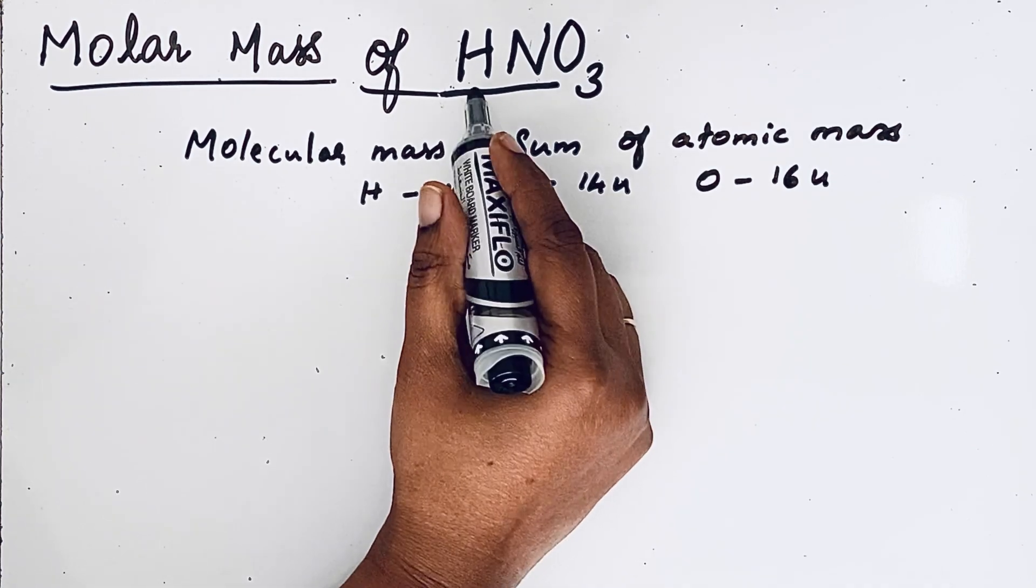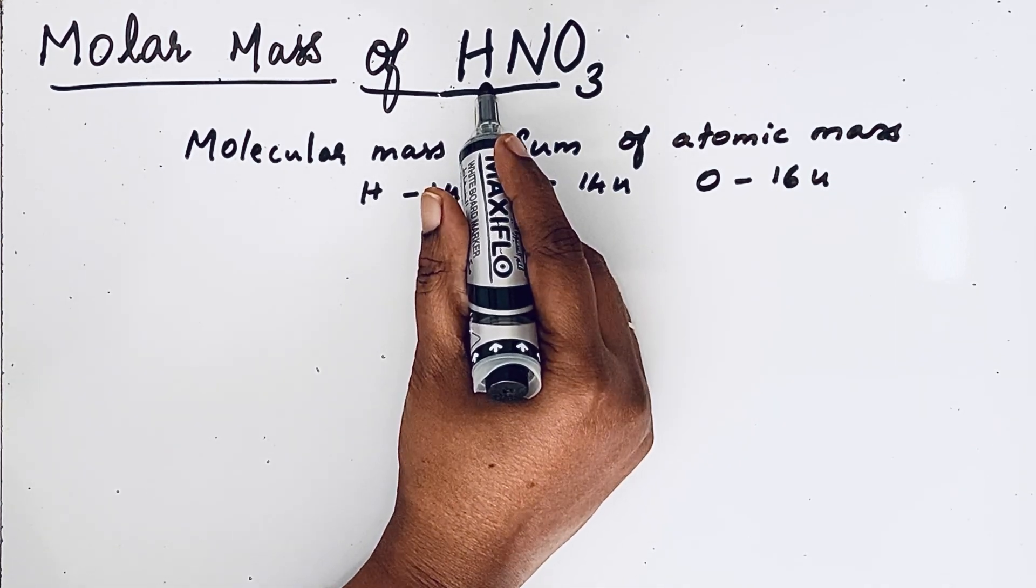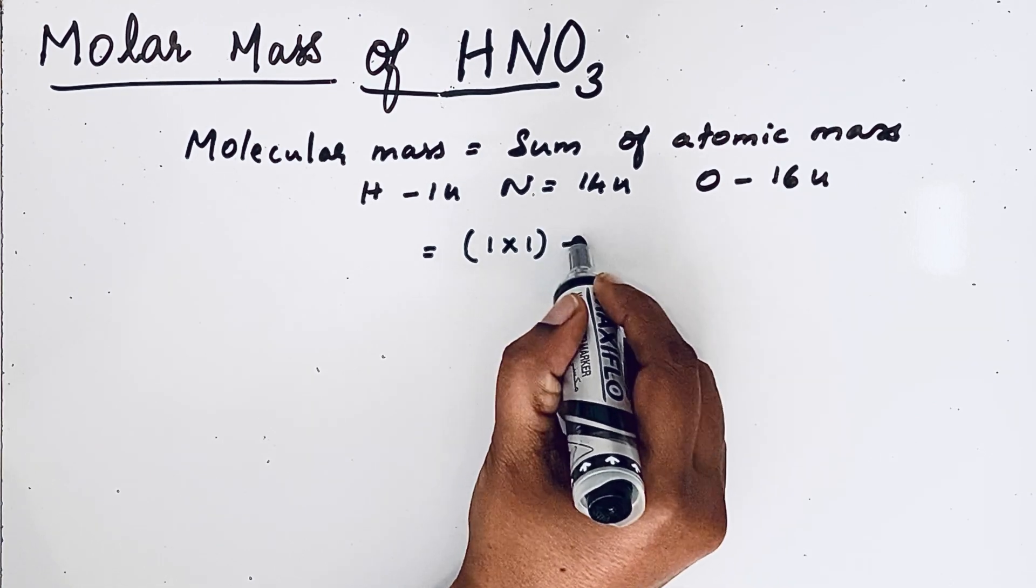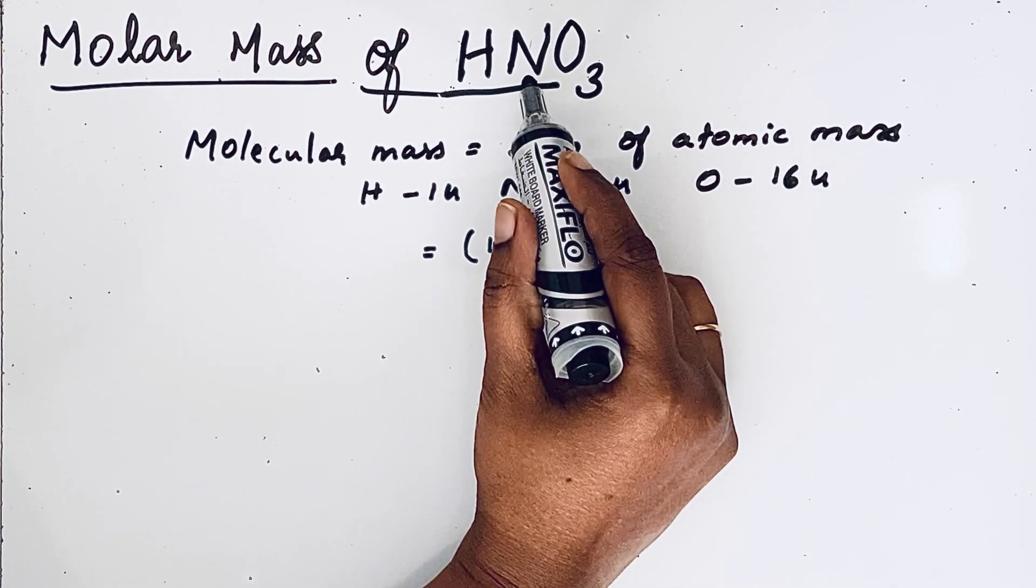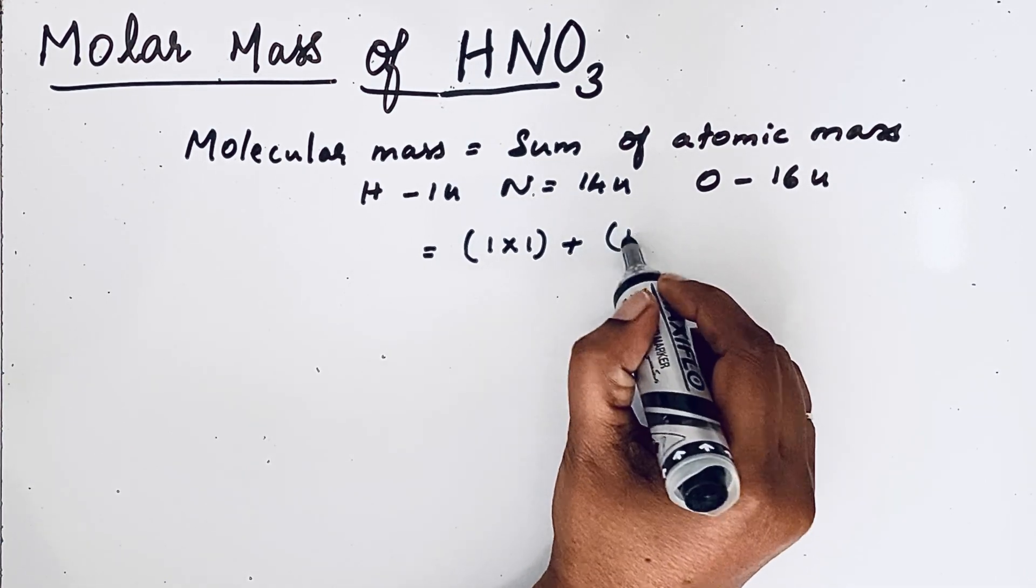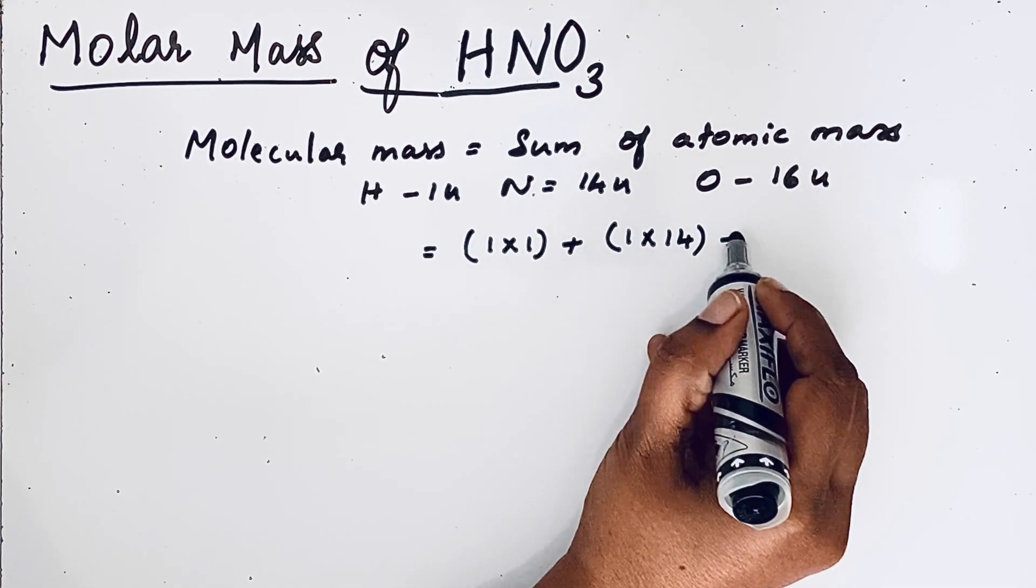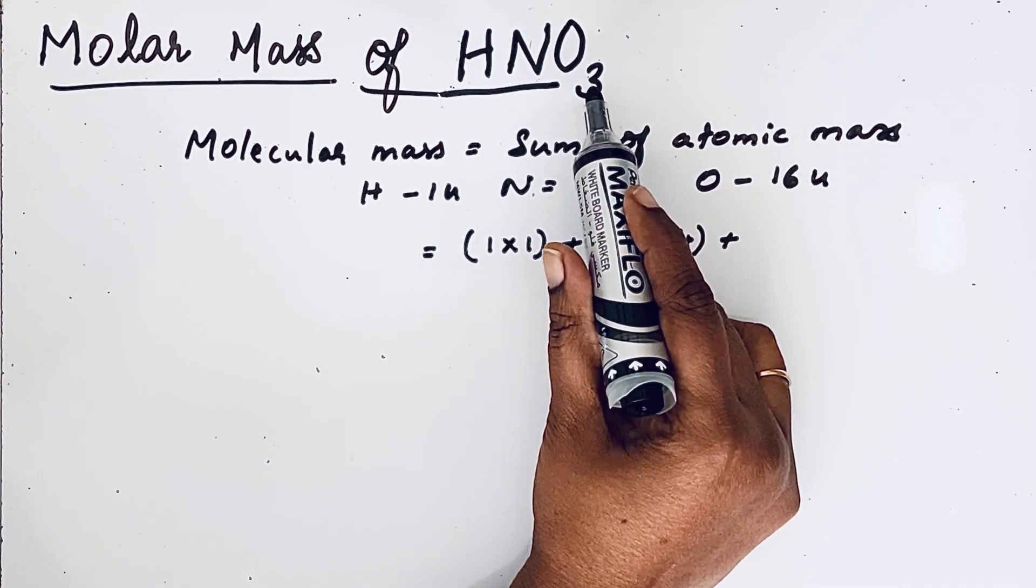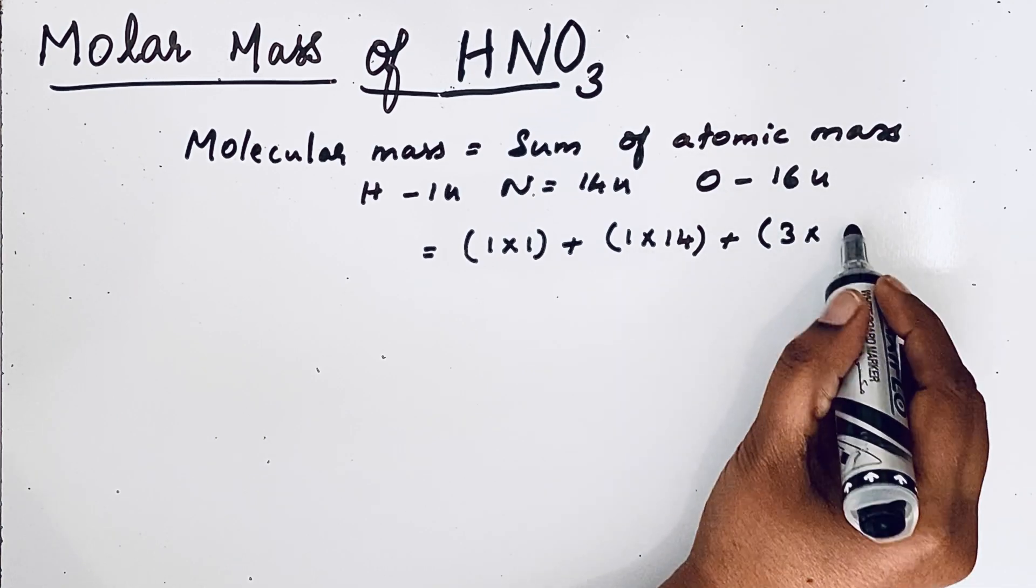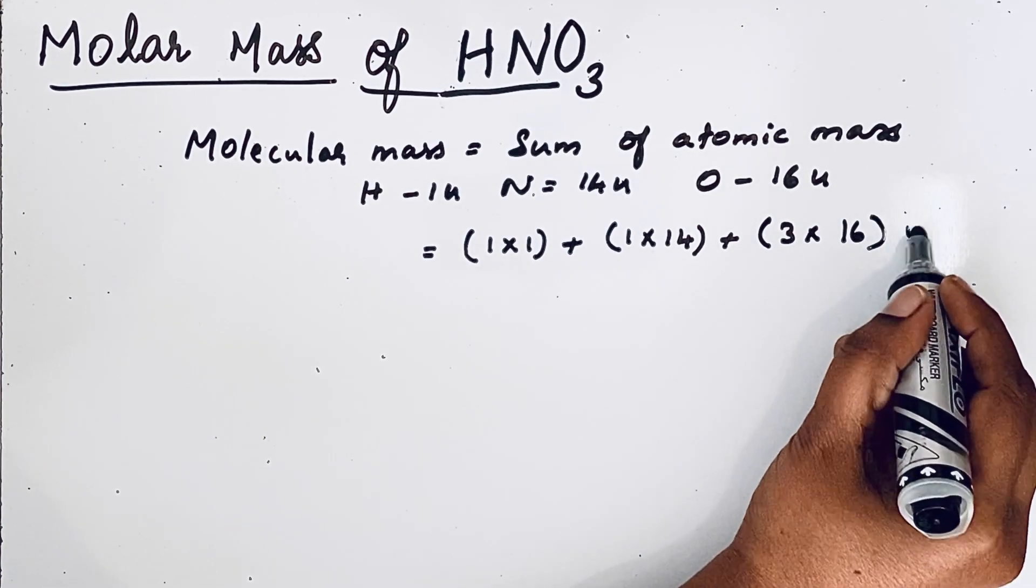in HNO3 we have only one hydrogen atom. So, 1 into 1 plus nitrogen, only one nitrogen atom. Atomic mass of nitrogen 14. So, 1 into 14 plus we have 3 oxygen atoms in HNO3 molecule. So, 3 into 16U.